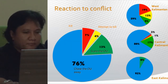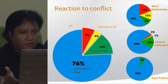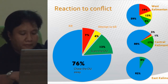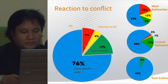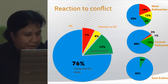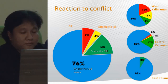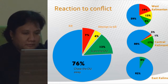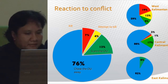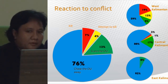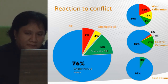This map shows reactions to conflict encounters, also published in PLOS Biology. According to interviews, 76% of respondents tried to chase the orangutan away, 7% tried to kill it, 4% attempted to kill it, and 13% scared or chased it away using other means. Breaking this down by province: West Kalimantan, Central Kalimantan, and East Kalimantan.